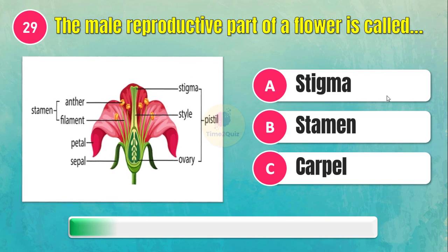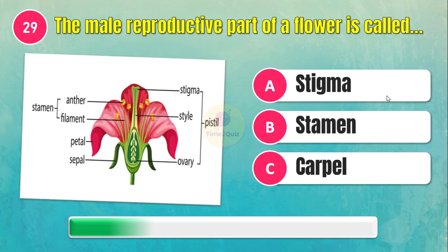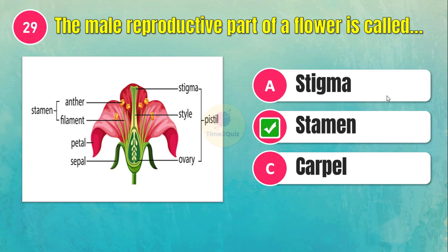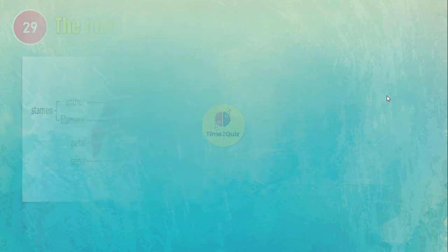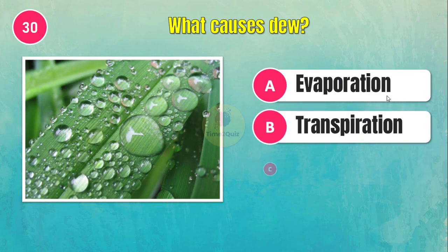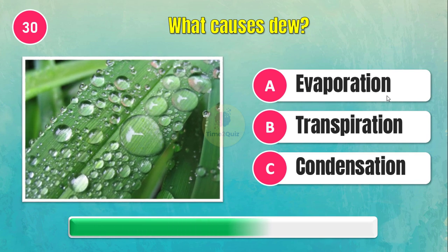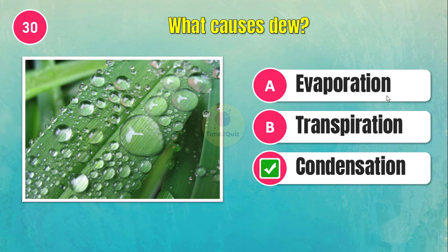Which of these gases solidifies to form dry ice? Sulfur dioxide. The male reproductive part of a flower is called the stamen. What causes condensation?